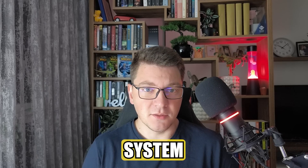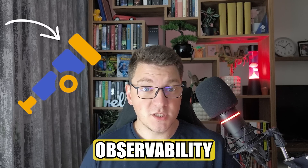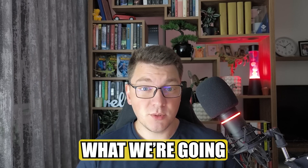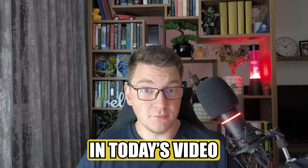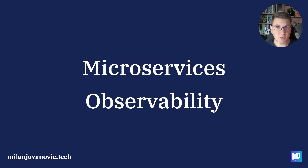You have a microservices system, but how do you know what is going on inside? This is where observability comes in, and that's what we're going to explore in today's video. Having a good observability setup in place is critically important if you want to build high-quality distributed systems. In a typical microservices system, you would have many distributed components communicating with each other, and it's very difficult to trace the flow of a single request going through multiple microservices — and this is exactly what observability gives you.